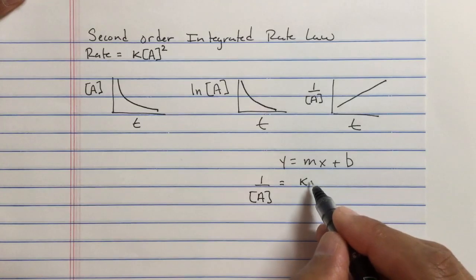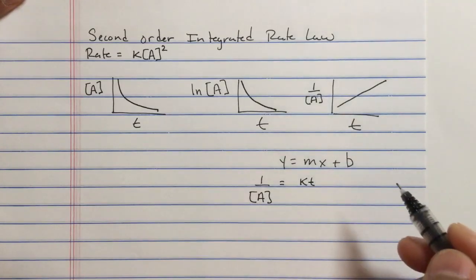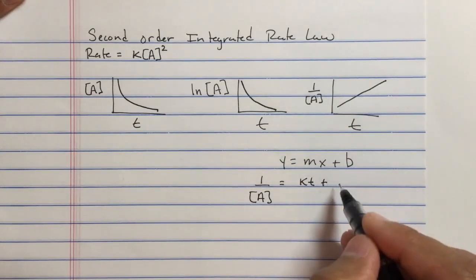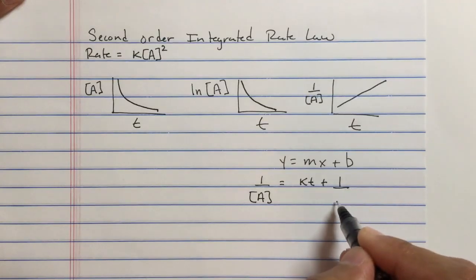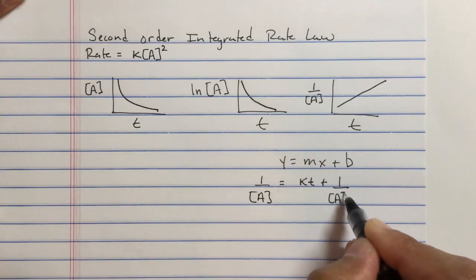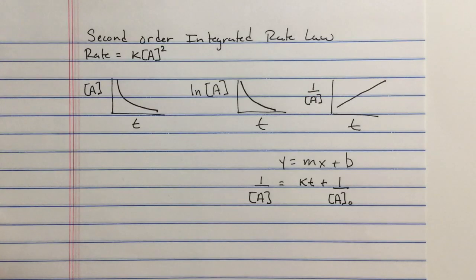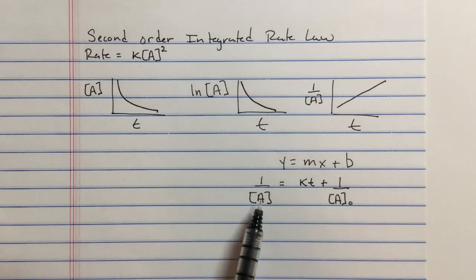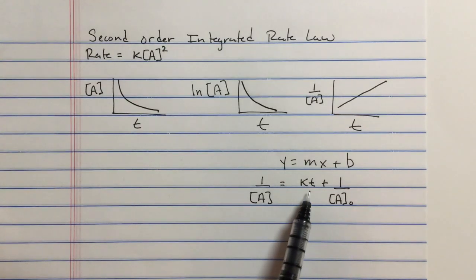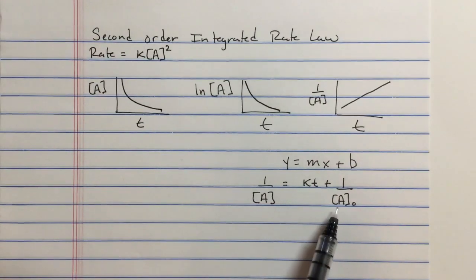x is the time, and b is the y-intercept, which is 1 over the initial concentration of A. This right here is your second order integrated rate law. It allows us to find the concentration of the reactant at a particular time if we know the rate constant and the initial concentration of the reactant.